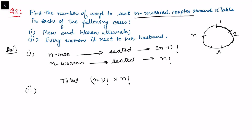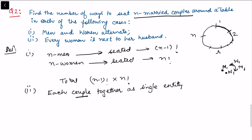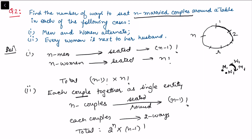In the second case, every woman must be next to her husband. Consider each couple as a single entity — when a couple arrives, they sit together. Within each pair, the man can be first or the woman can be first, giving 2 arrangements per couple. There are n couples, so n couples can be seated around the table in n minus 1 factorial ways, and each couple has 2 internal arrangements. The total is 2 to the power n times n minus 1 factorial.